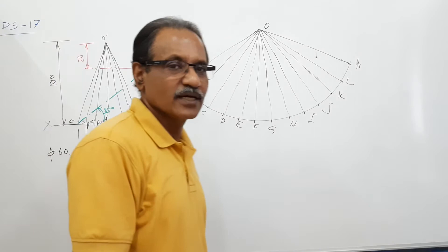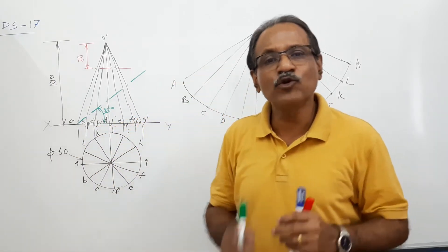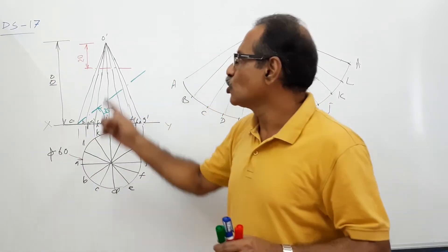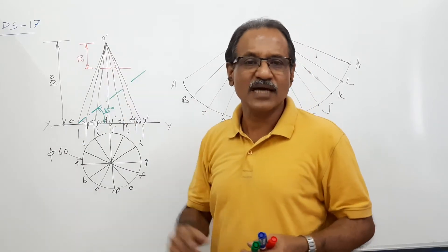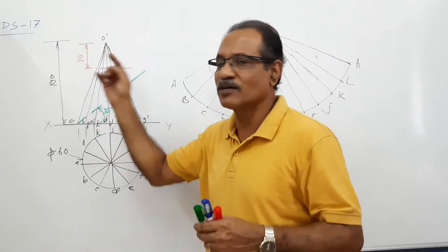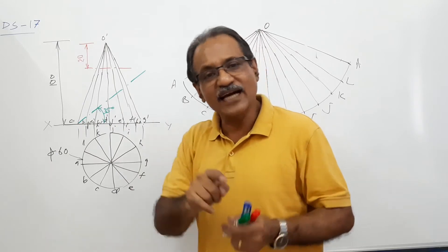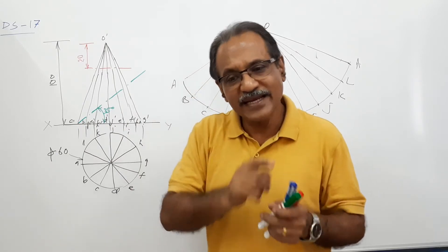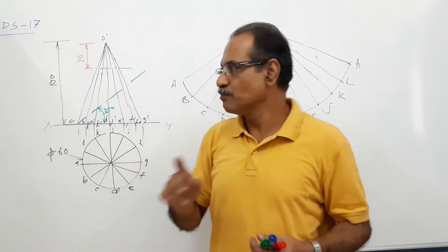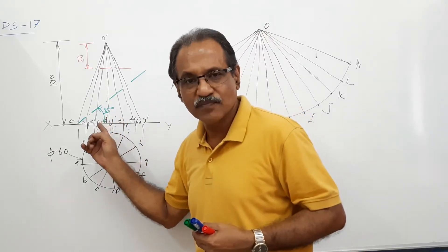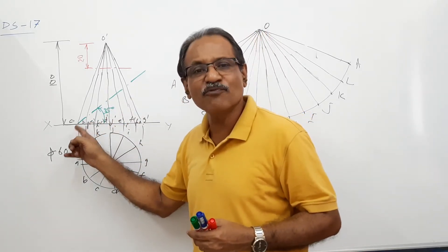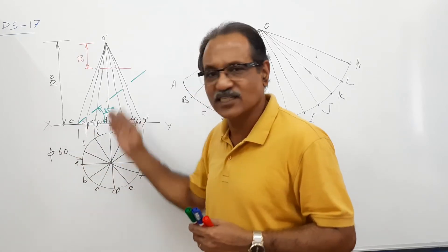I repeat — this cone is cut by two cutting planes. One is horizontal, passes through 20 mm below the vertex. The other is a cutting plane inclined to HP and perpendicular to VP, making 35 degrees to HP, passing through one of the extremities of the base of the cone — A dash or G dash.